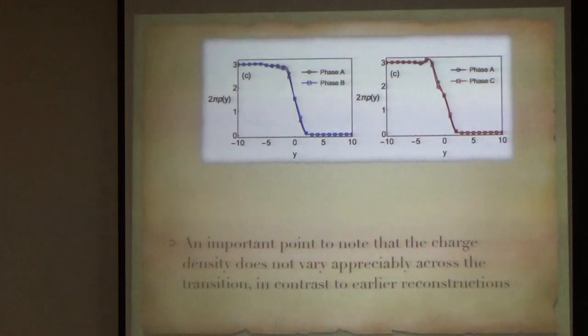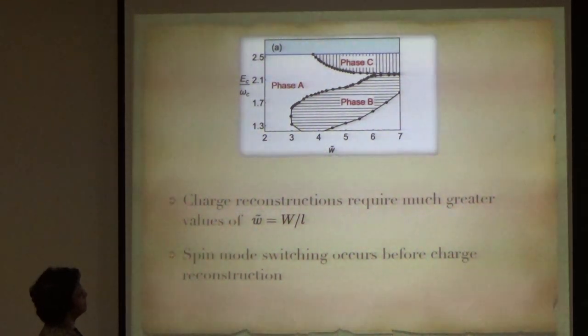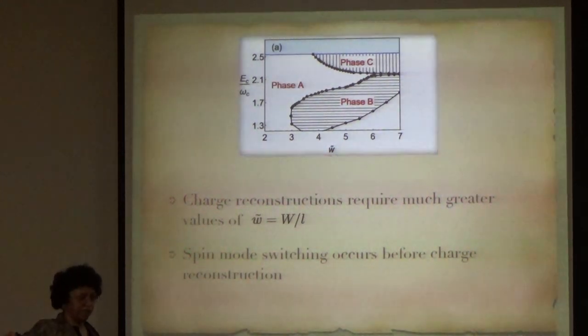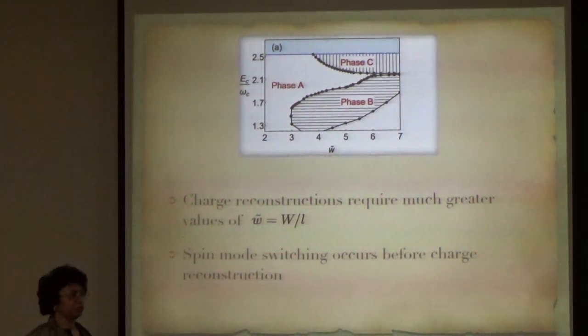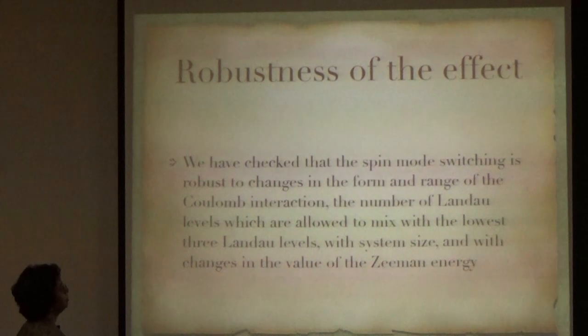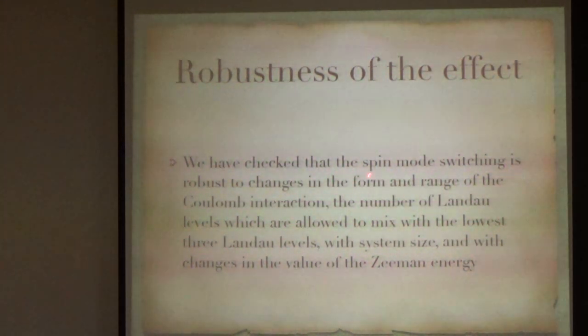And, an important point to note here is that the charge density does not vary appreciably across the transition. So, if you look at the charge density that remains the same in the phase A and phase B. It is only the spins which are switching. So, this is very unlike the charge reconstruction that people talked about earlier. In fact, charge reconstruction, they had also talked about going to much larger W's. In fact, it was much above this. And, in our case also it perhaps will occur, but it will be at much larger W's. So, the spin mode switching occurs before charge mode switching. We have checked that the spin mode switching is robust to changes in the form and range of the Coulomb interaction.